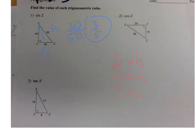Now for number two, we're finding the cosine of angle Z. Here's angle Z, here's the hypotenuse, and this is the adjacent side because it's next to it. Cosine is adjacent over hypotenuse, so the cosine of angle Z will be 15 over 25, which reduces to 3 over 5.